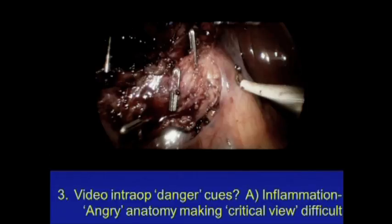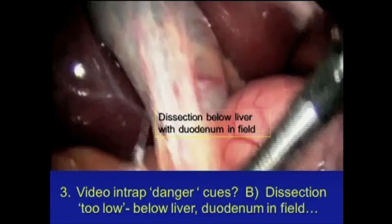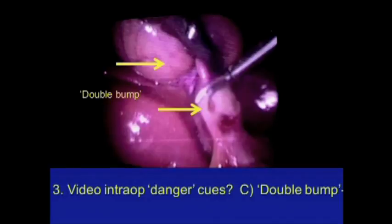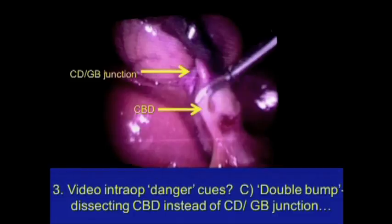Video intraoperative danger cues. First, inflammation — angry anatomy — making visualization of the critical view challenging. You can see there are clips in a lot of random places on this video segment, which is from cases I used to review for the military; all of these slides are extracts from that series. The next danger cue: where the dissection is too low, either below the liver or the duodenum is in the operative field. The double bump sign — a bump at the top, which is the junction of the cystic duct and the gallbladder, and a second bump where there's inflammation from Calot's node. Where you want to be is at the junction of the gallbladder and the cystic duct; where you often are working is down right on the common duct.